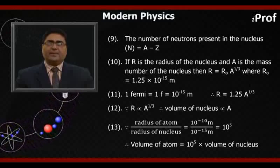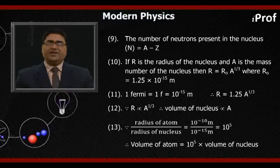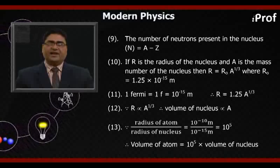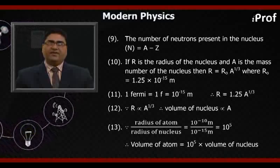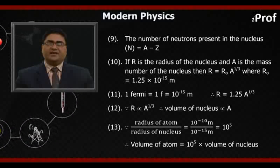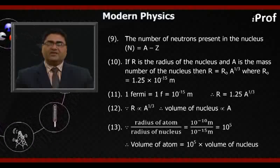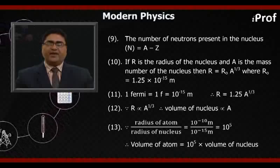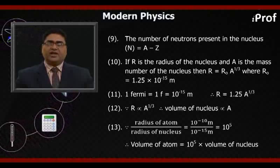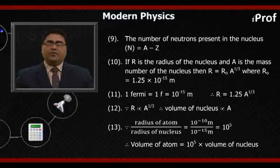Twelfth, since R proportional to A^(1/3), radius of atom divided by radius of nucleus equals 10^(-10) divided by 10^(-15) equals 10^5. Therefore, volume of atom equals 10^15 times volume of nucleus.